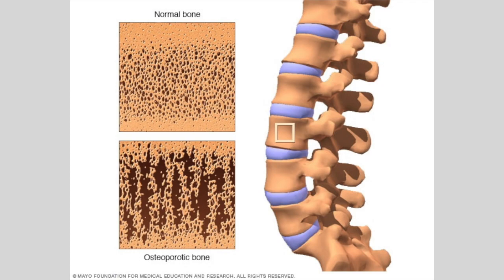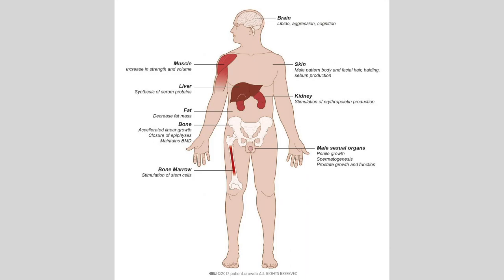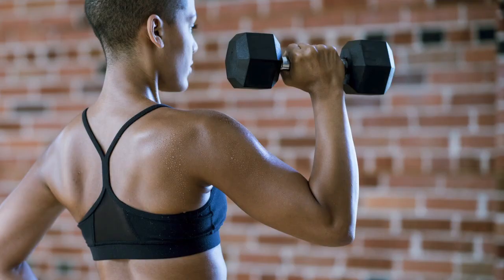Osteoporosis — you guys probably already heard of this in my skeletal system video, but in a more hormonal sense, osteoporosis occurs when not enough estrogen is produced, which can cause a woman's bones to become weak and brittle. Men can have osteoporosis when testosterone gets too low, but it is more common for females. Speaking of low testosterone levels, men with low testosterone levels can also develop hypogonadism, and this can lead to erectile dysfunction, memory and concentration problems, changes in muscle strength, and a low sex drive.